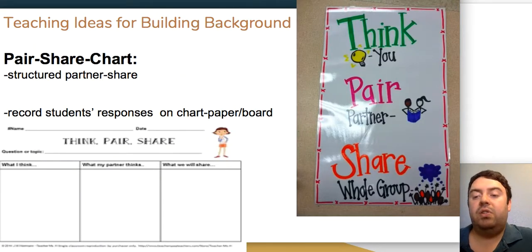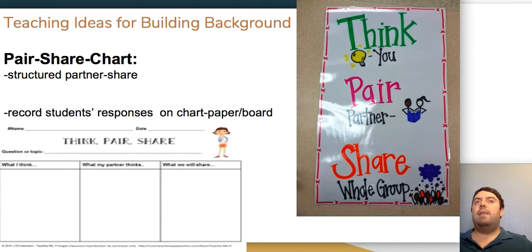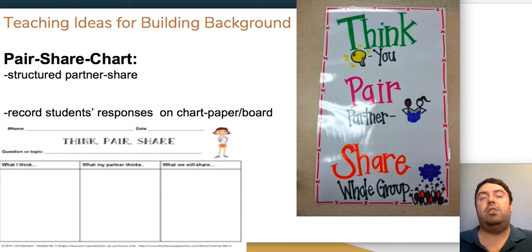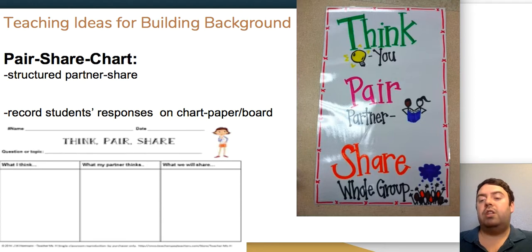A think-pair-share chart formalizes the think-pair-share process to keep students accountable. After the teacher poses a question, students write down their own thinking, record what their partner thinks, and then write what they will share together as a pair. This ensures students actually produce something concrete rather than simply claiming they talked to their partner, and it helps facilitate class discussion.